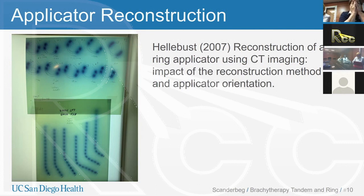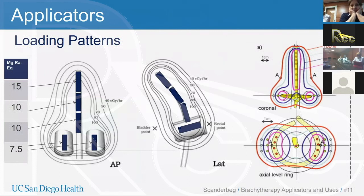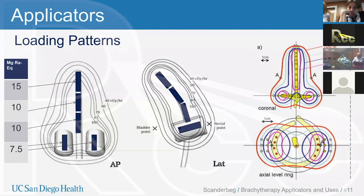Moving on to loading — as mentioned two weeks ago, there are a variety of methods to load a given applicator. In this scheme, all applicators use a 3-millimeter step size for the Varian GammaMed afterloader and a 2.5-millimeter step size for Nucletron afterloaders. When loading the tandem, we want to load dwell positions to the outer surface of the ring, but not beyond, such that sources are not protruding into the ring or further inferior into the vagina — what we would call a protruding source.